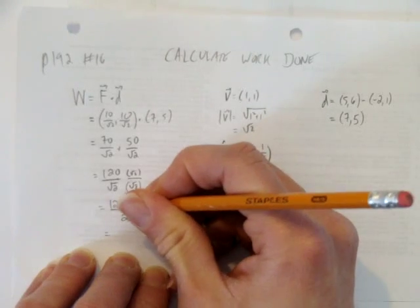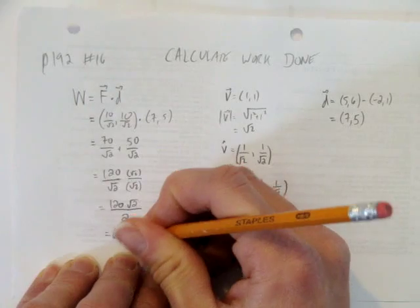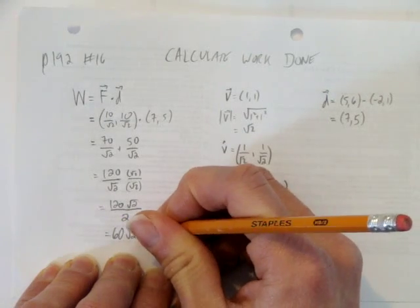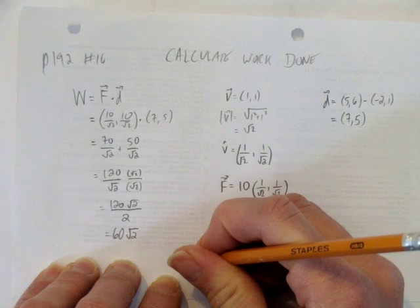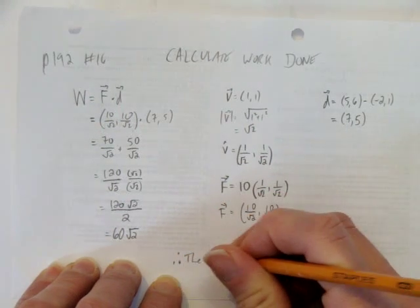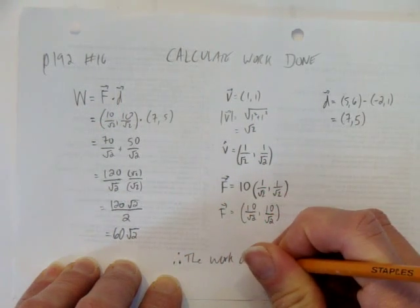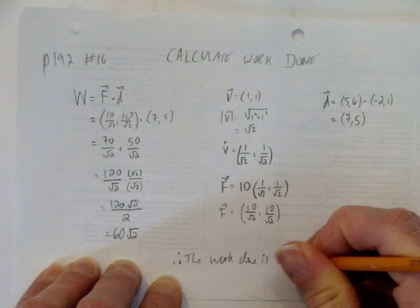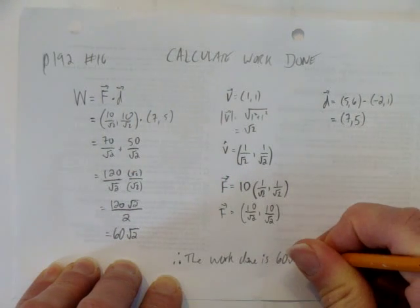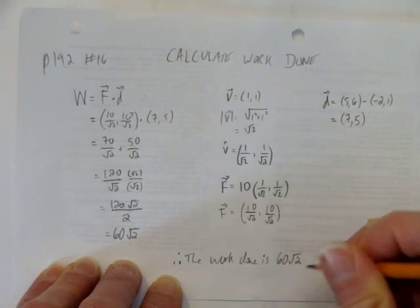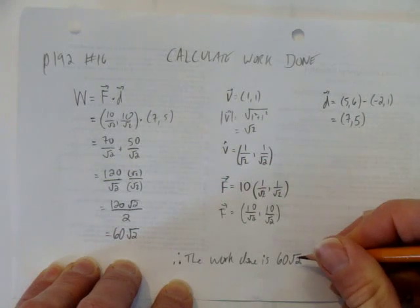And now we can simplify. What's 120 divided by 2? Just 60. And so the answer is 60 root 2. In other words, the work done, we'll need a therefore statement because it's a word problem. So the work done is 60 root 2. And our units are, of course, joules.